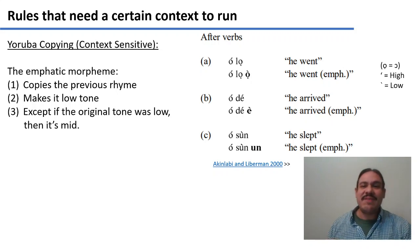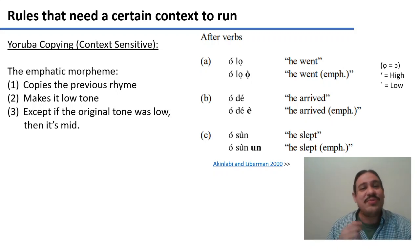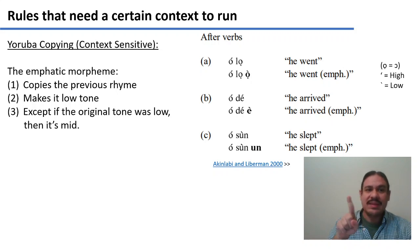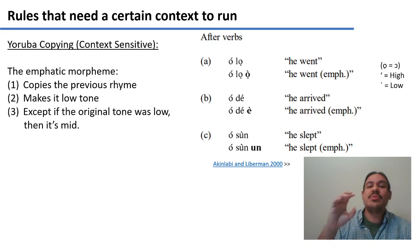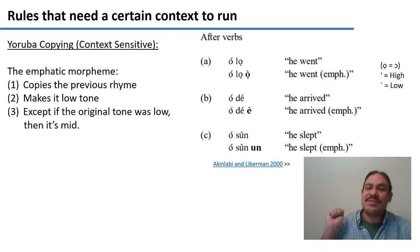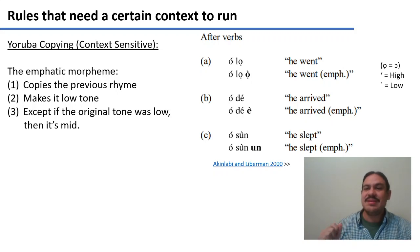If we wanted to build the emphatic for 'wow, he went,' we would need to take the rhyme of the preceding syllable — the vowel O and any final consonants (there are none here) — and then take its mid-tone and turn it into a low tone. So we have the emphatic 'o-lo-o,' meaning 'he went.' The tones here are high, mid, low.